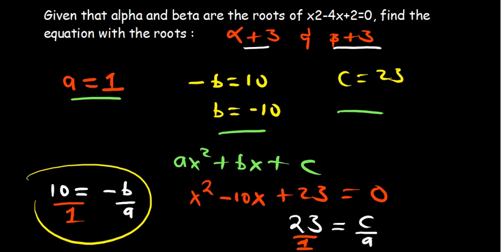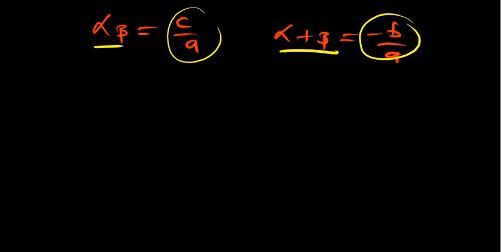This is how you find the new equation when given alpha and beta as roots. You use alpha and beta, add them, multiply them, and equate them to what they equal. The takeaway point is the product is c over a and the summation is negative b over a. After you find the values of alpha plus beta and alpha times beta, use the new roots, add them and multiply them, then substitute the values to find their summation and product. Equate them to c over a and negative b over a to find the values of a, b, and c.